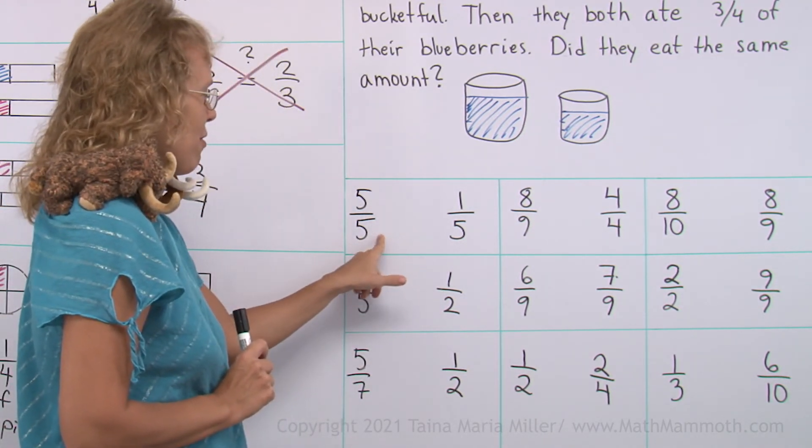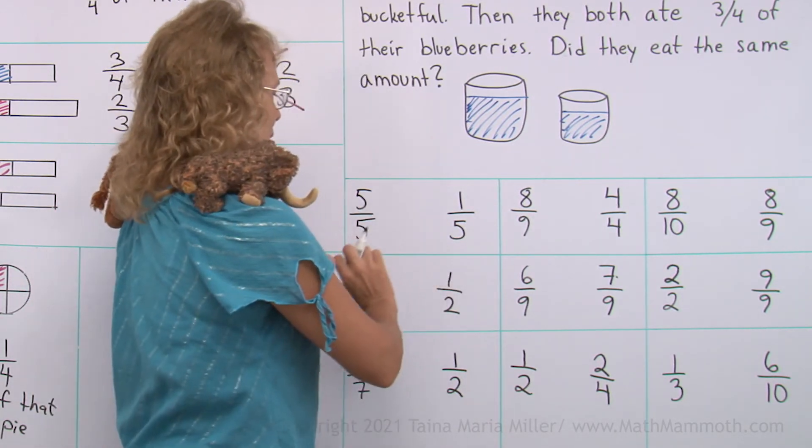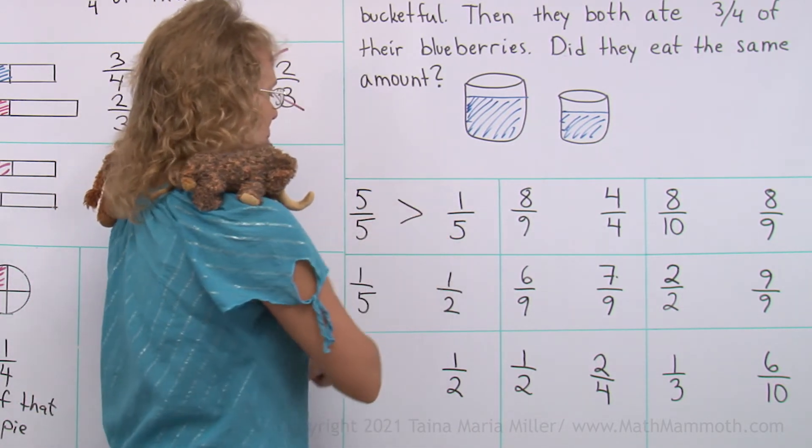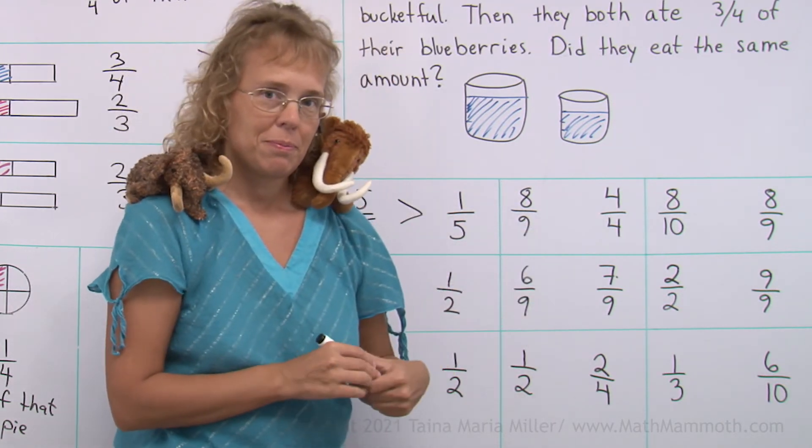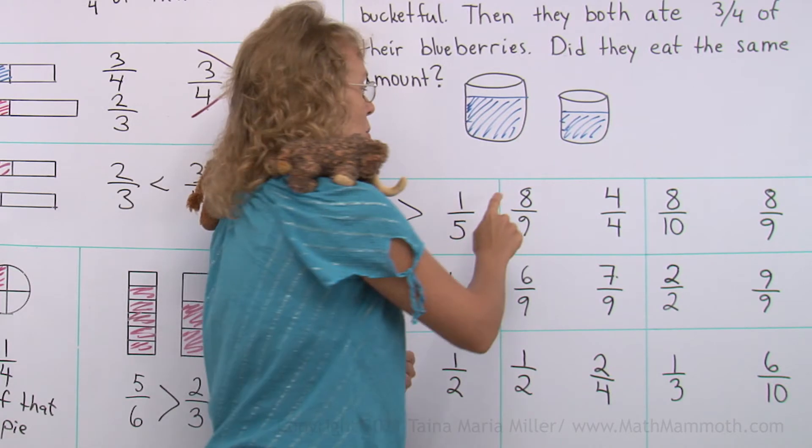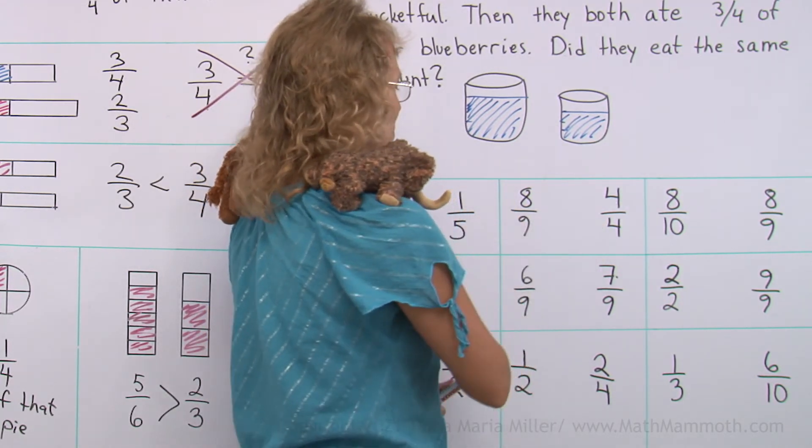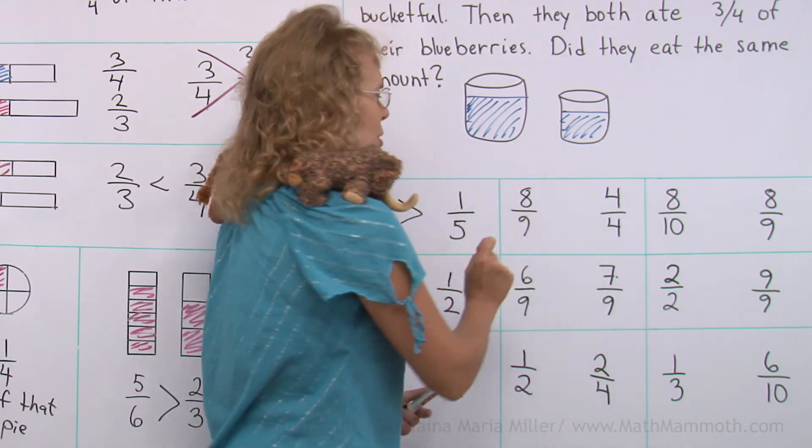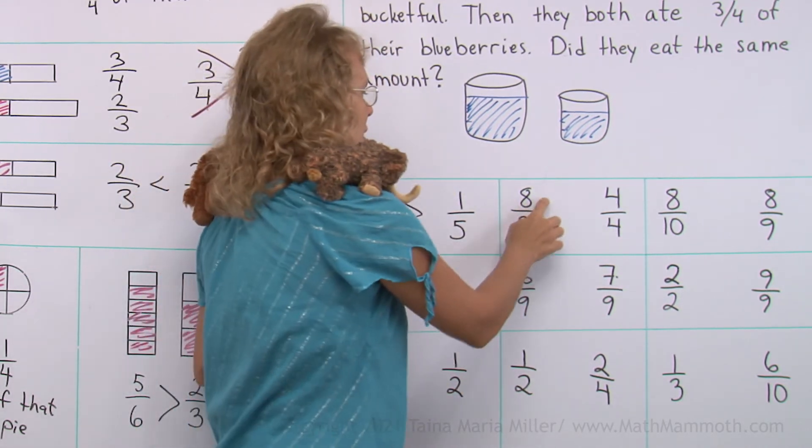So, which one is more? Five-fifths or one-fifth? These are the same kinds of pieces. So five pieces is more than one piece. Eight-ninths and four-fourths. Don't get fooled and think that eight is a bigger number than four, or nine is a bigger number than four. Four-fourths is actually equal to one, one whole pie, right? Eight-ninths is not. It is less than one pie.